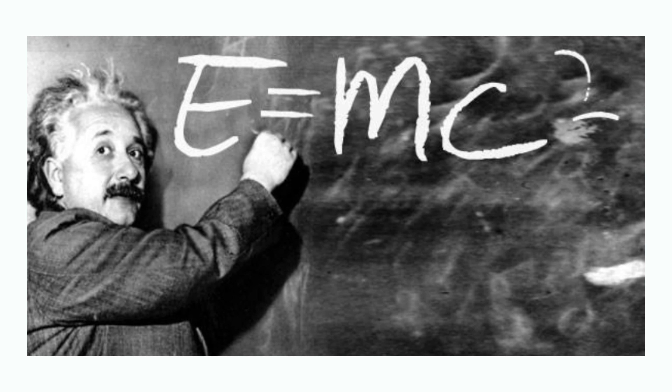The special theory of relativity also introduced the most famous equation E=mc², which demonstrated the relationship between mass and energy. This equation showed that mass and energy were interchangeable, and that a small amount of mass could be converted into a large amount of energy. Einstein's general theory of relativity, published in 1915, built upon the special theory and proposed a new understanding of gravity.